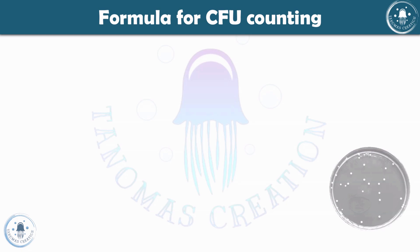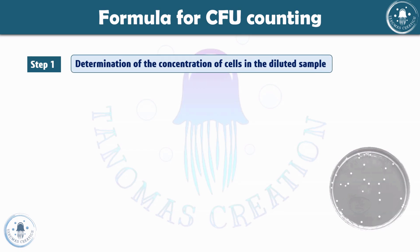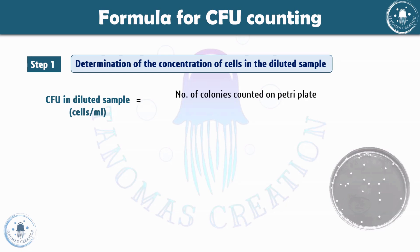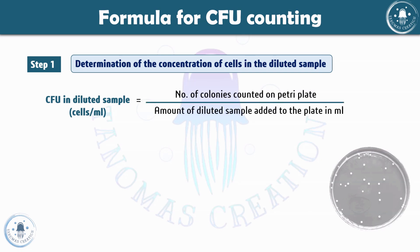Now, the CFU counting formula is divided into two steps. Step 1 is determination of the concentration of cells in the diluted sample. Suppose you are taking from 10^-4 — you pour some of that sample onto your agar plate and spread it. You need to find how many colonies are present in that diluted sample. The formula is: number of colonies counted on that particular plate divided by the amount of diluted sample added to the plate in ml.